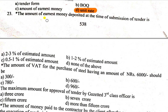Question number 23: The amount of Earnest Money is deposited at the time of submission of tender. Why is it called Earnest Money? It is the money which is submitted at the time of submitting the tender. Advance money is 2-3% of estimated cost.